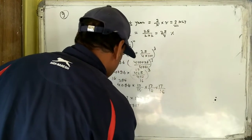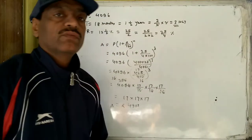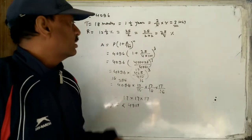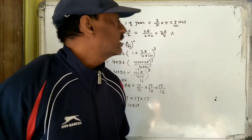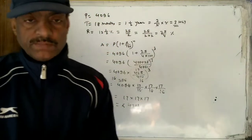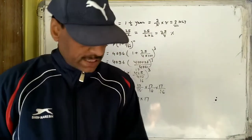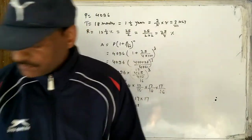So the amount comes out to 4913. This is simple calculation — if you keep the calculation in mind, you will have no difficulty solving this question. The next question is question number 10.